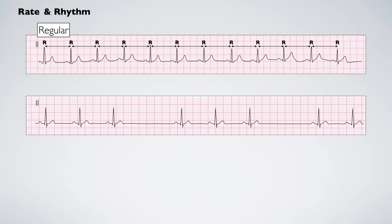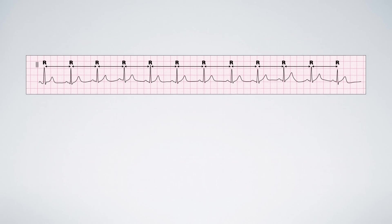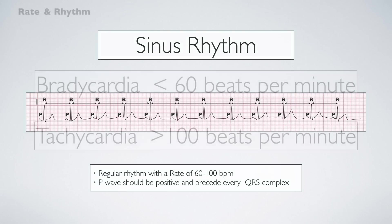The rhythm can also be regularly irregular or irregularly irregular. The most common rhythm you will see is sinus rhythm. Sinus rhythm is confirmed when the rate is between 60 and 100 beats per minute, the rhythm is regular, and P-waves are positive and precede each QRS complex. The QRS complex should be narrow with normal morphology. Anything that does not match this criteria is considered an arrhythmia.